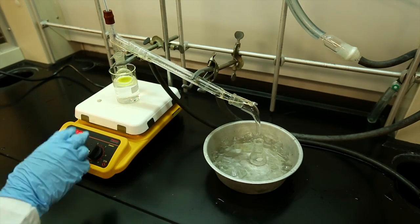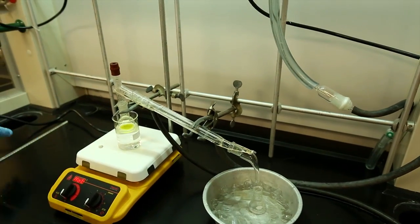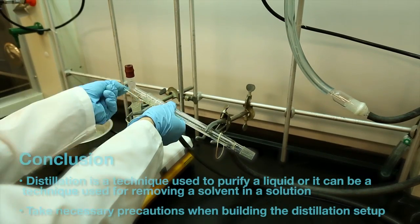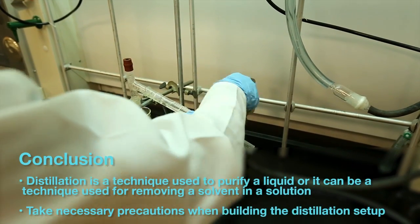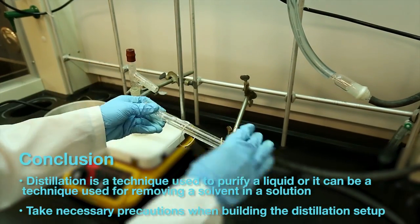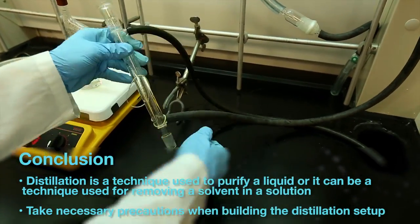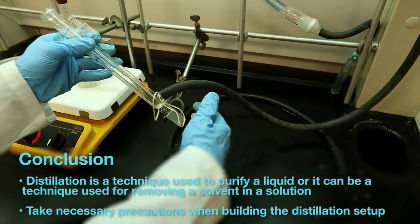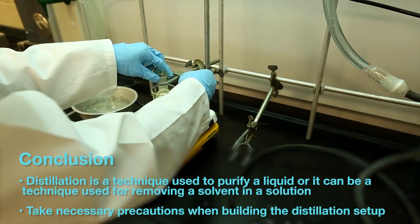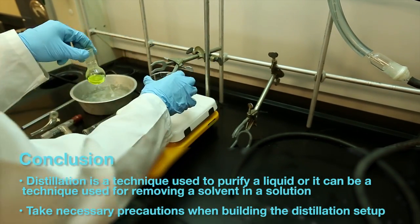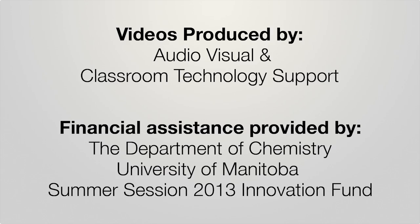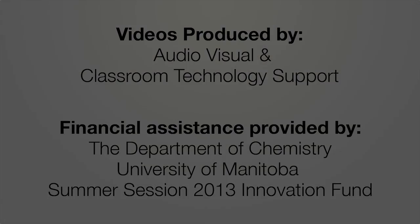We take the setup apart, perform the order of operation for the setup in reverse and start with the thermometer. As a summary of this video, you have learned that distillation is a technique used to purify a liquid or it can be a technique used for removing a solvent in the solution. You have now witnessed how easy a simple distillation can be to set up, but it takes practice and planning. Be sure to take all the precautions mentioned in this video such as securing glassware with the elastic bands and the order with which the apparatus is built. We'll see you next time. Thank you.